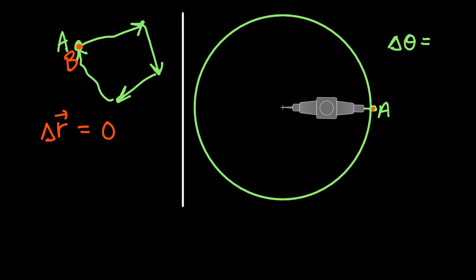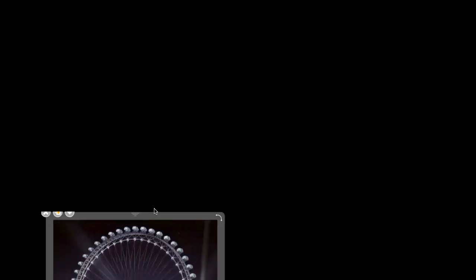That's different than linear displacement. We mentioned earlier that angular displacement is a vector quantity. Angular position is a vector quantity. Let's discuss how we determine the direction of this vector. We take a ferris wheel here and...